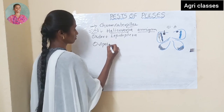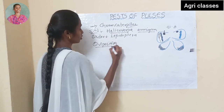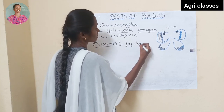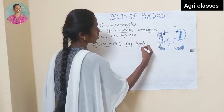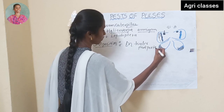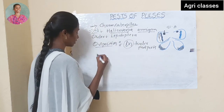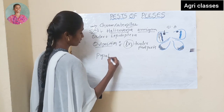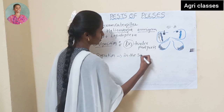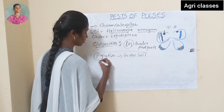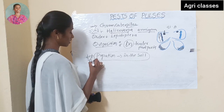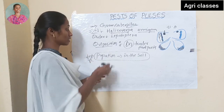Oviposition occurs on tender plant parts — not in or under, but on tender plant parts. The pupation site is inside the soil. This is a very important point from an exam perspective — pupation inside the soil.